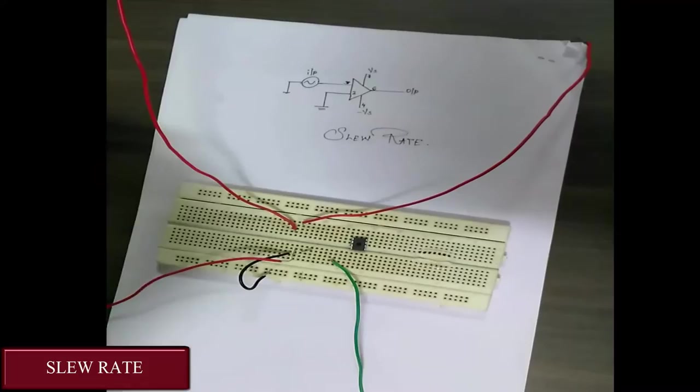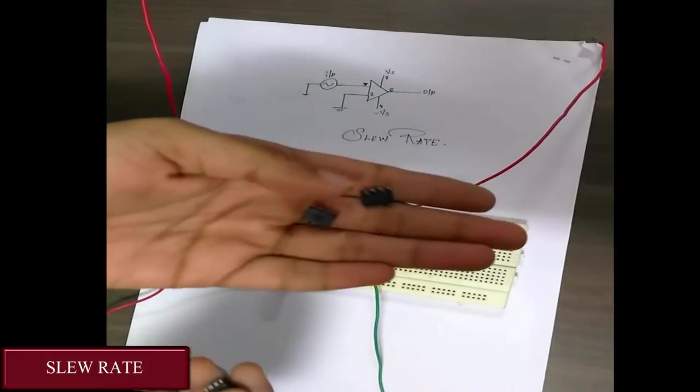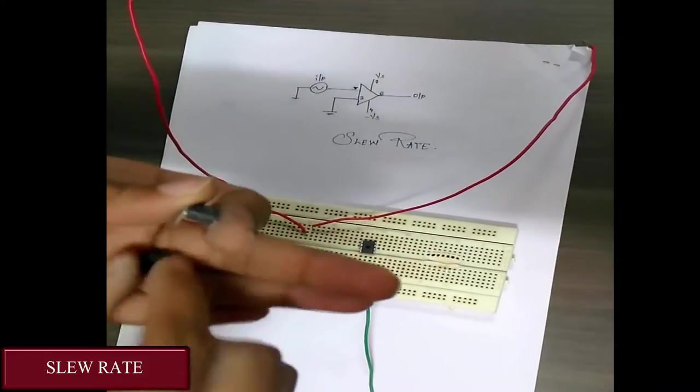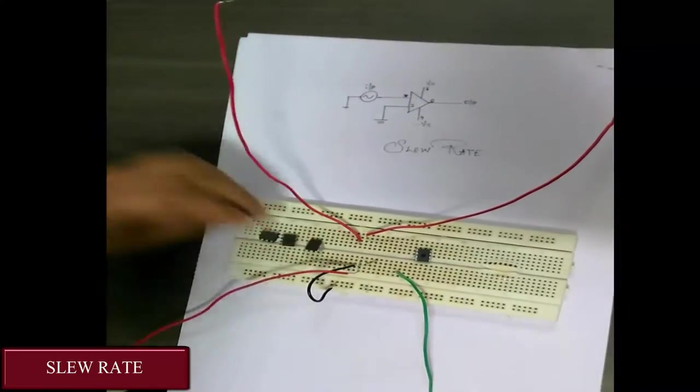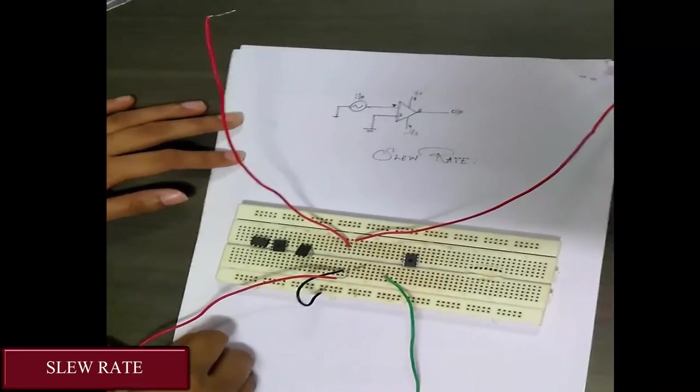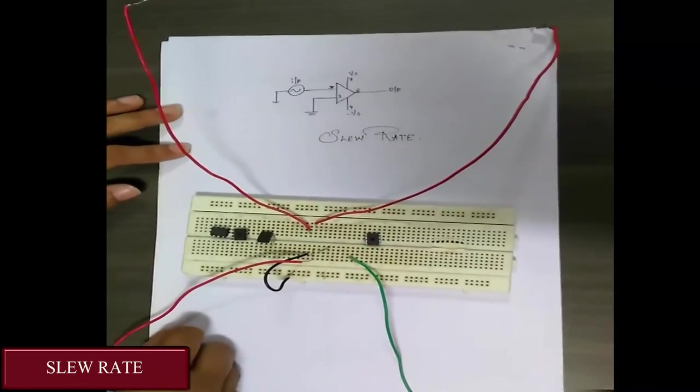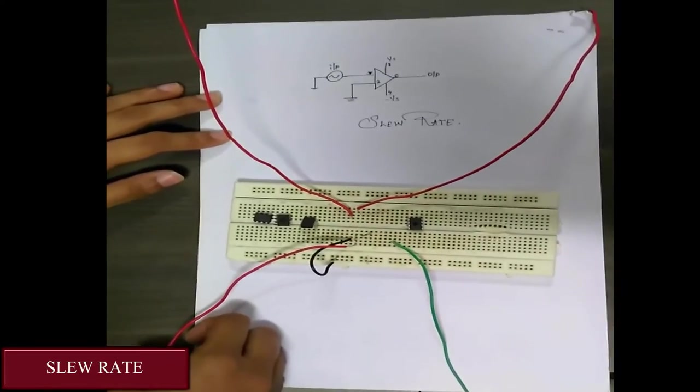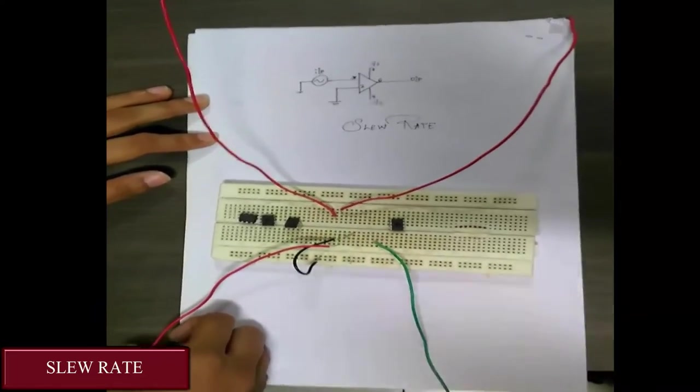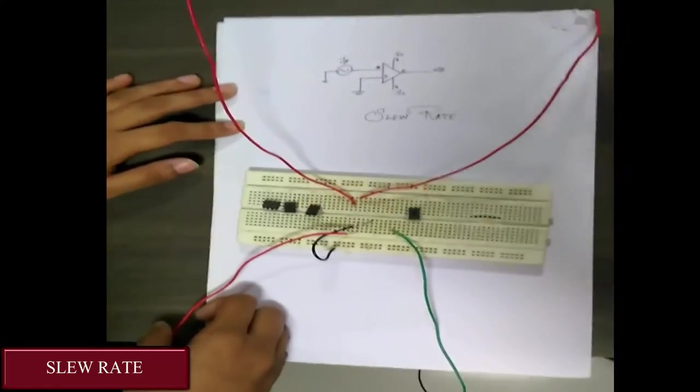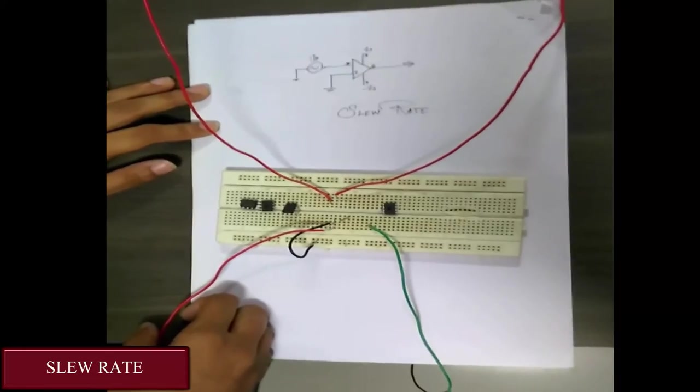Along with that we are going to use different kinds of ICs like OP07, OP27, and OP37. According to the data sheet we have observed that slew rate of OP37 is more. Now let's see whether it is really greater than others and whether it is really good or not.